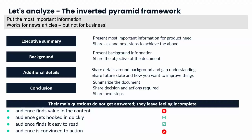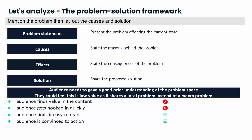Let's try the third and most popular framework — the problem-solution framework. It has a four-paragraph structure: problem statement, causes, effect, and solution, with relevant details in all. The advantage is that it shares the problem up front and can be effectively used in many situations. But does it work in totality? No. The audience needs a good prior understanding of the problem space, and they could also feel this is low value, as it shares a local problem instead of a macro problem.